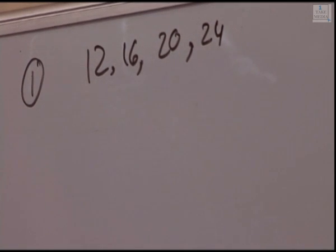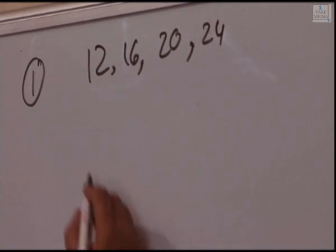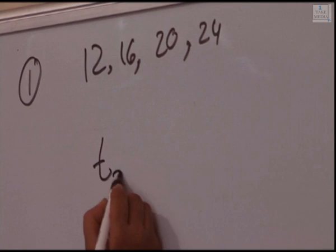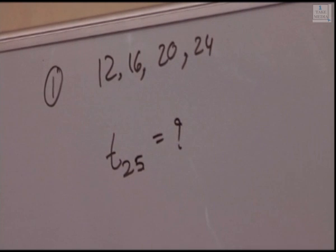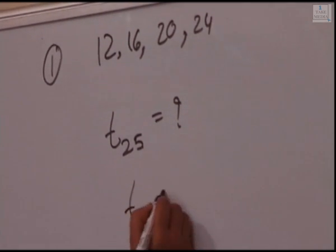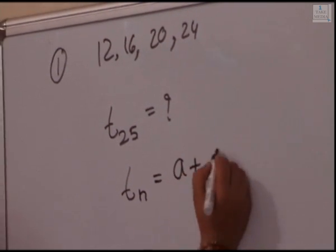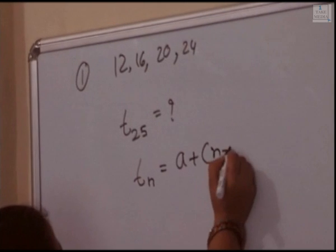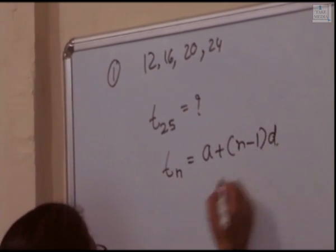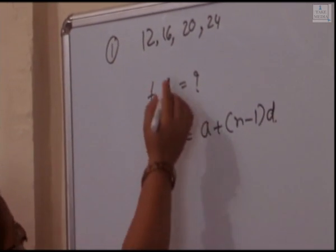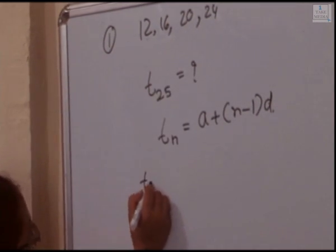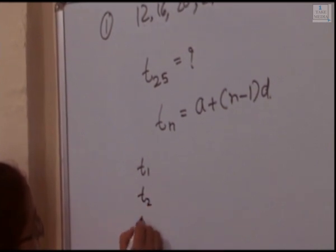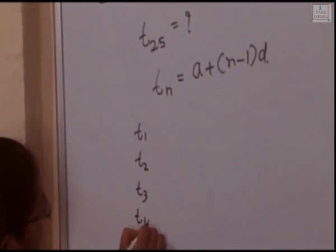We have to calculate the 25th term, means we have to calculate T25. The formula is Tn equal to A plus N minus 1 into D. So here we have to calculate the common difference, so we look at T1, T2, T3 and T4.